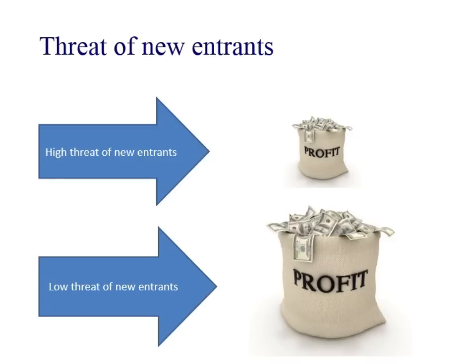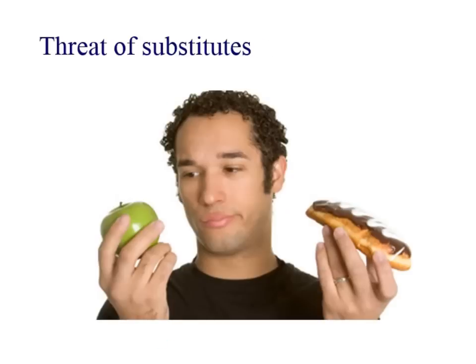So looking at the model: if there's a high threat of new entrants coming into the market, this makes your profit small. Whereas if there's a low threat of businesses coming into the market, they're not going to compete away the profit. You've almost got a more monopoly or oligopoly stance, and we know from unit 1 that profit is much higher when you're a monopoly than when it's monopolistic competition.